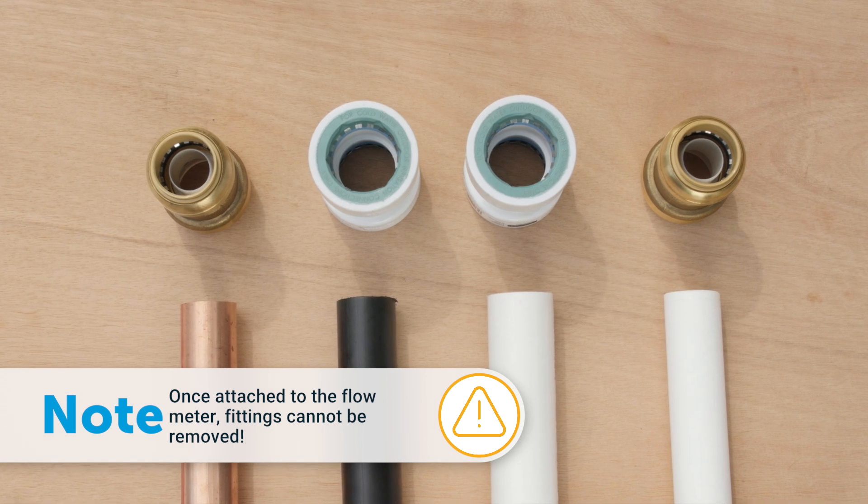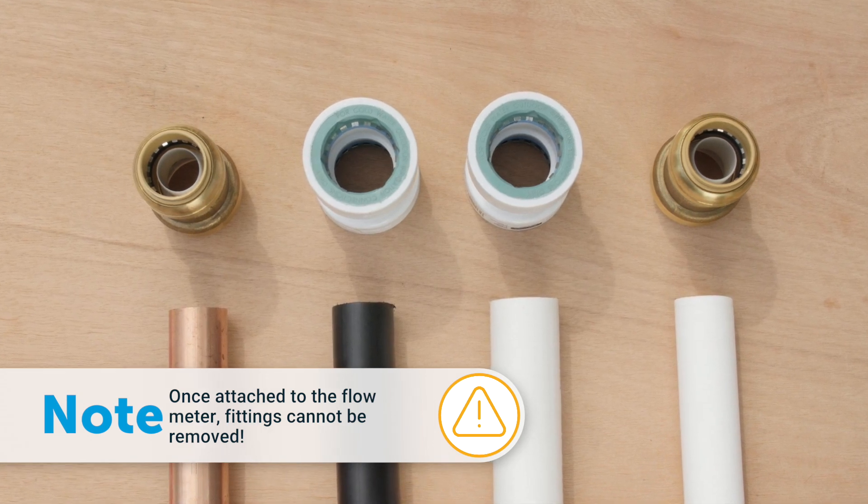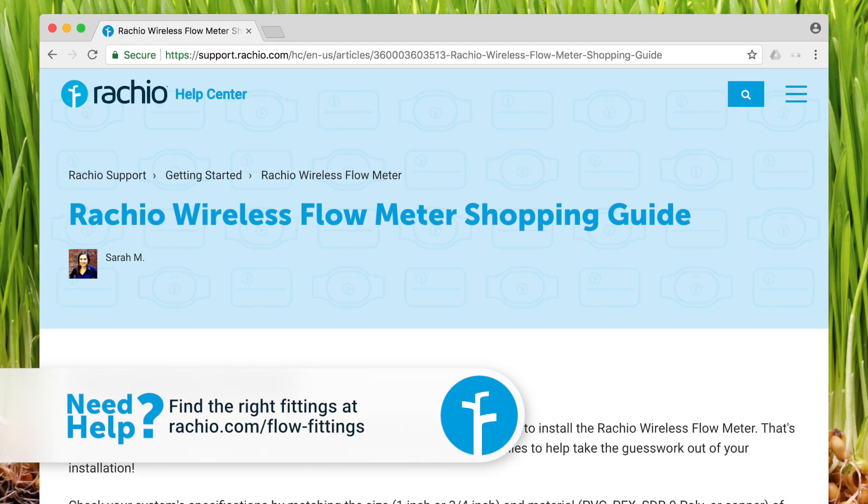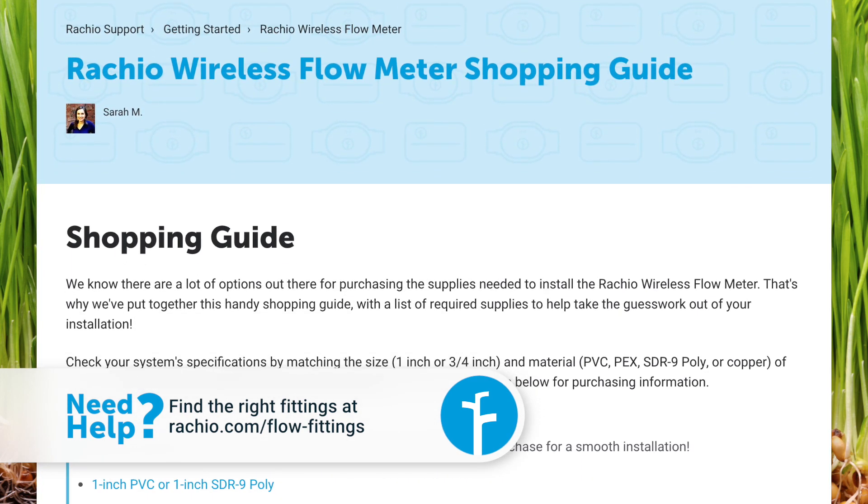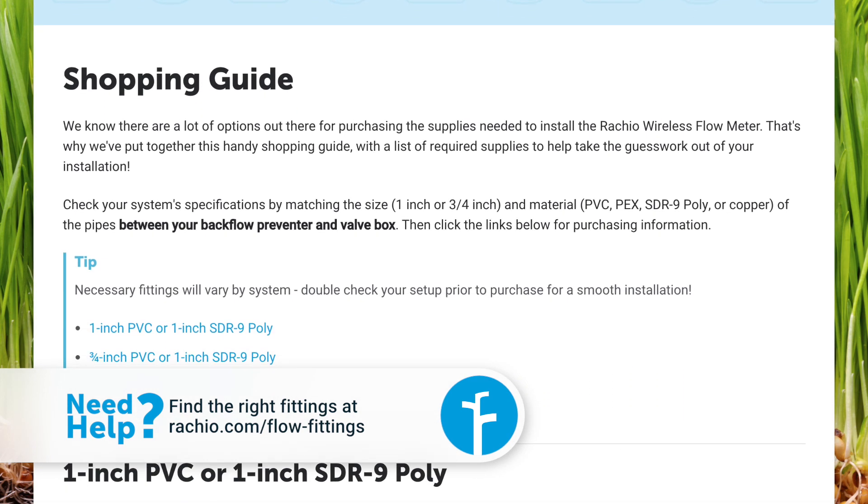Fittings cannot be removed from the flow meter once attached, so it's important to use the right ones. Visit Rachio.com/flow-fittings to learn how to select the right fittings.